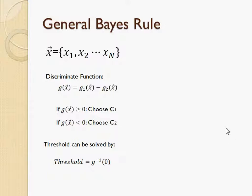If we apply the general Bayes' rule used for classifiers, G1 and G2 are the product of the density of each class and the class prior. A general discriminant function G of the feature vector can be written as the difference between G1 and G2. By comparing the value of G with 0, we can choose class 1 or class 2 accordingly. The threshold can be calculated by solving the discriminant function at the result 0.